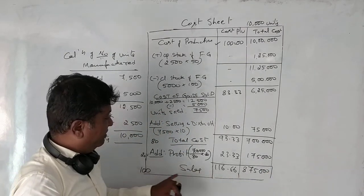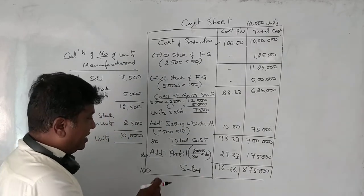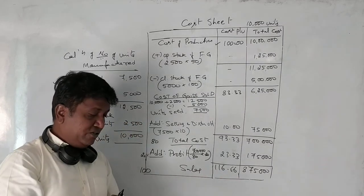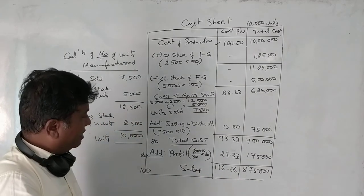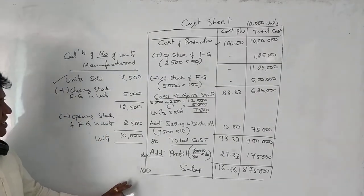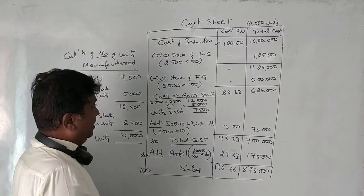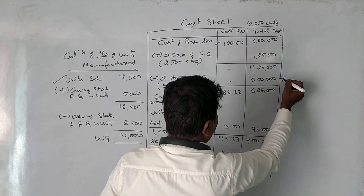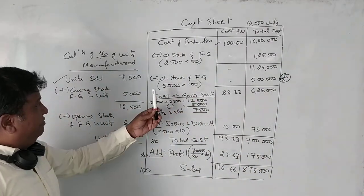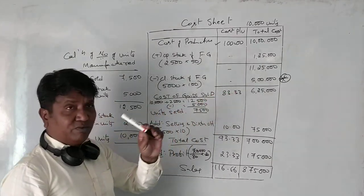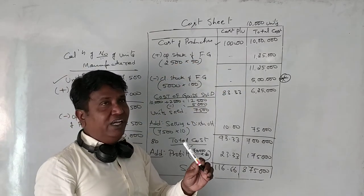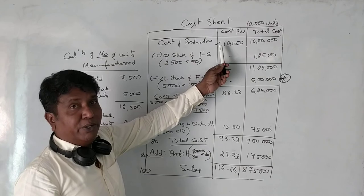You can cross check: 8,75,000 ÷ 7,500 units = 116.66 rupees per unit. This is a 6 marks question. The very important point is: if you don't get the correct figures, it means you haven't found the cost of production per unit correctly.